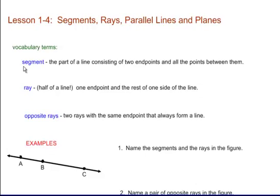First of all, a segment. This is the part of a line consisting of two endpoints and all the points between them. I have two endpoints and just the points that go between them. This is a drawing of a segment. I'm going to name this point A and this point B. We use the endpoints and draw a segment line over it — no arrows. This is how I know it's a segment and not a line, because it does not have arrows. You can also write it backwards — it means the same thing. These are identical segments.